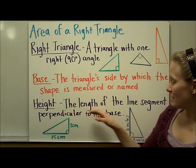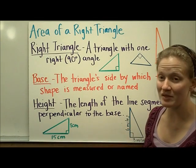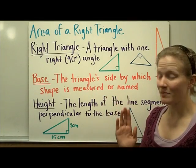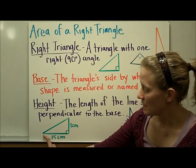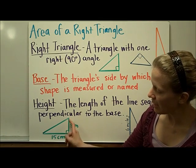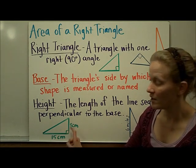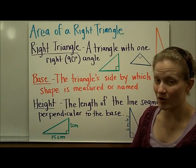The height is the length of the line segment perpendicular to the base. Perpendicular means that with the base, it makes a 90 degree angle. In this case, we would call this the base, and then this side is the height because it makes a 90 degree angle with the base. This side and this side are perpendicular.